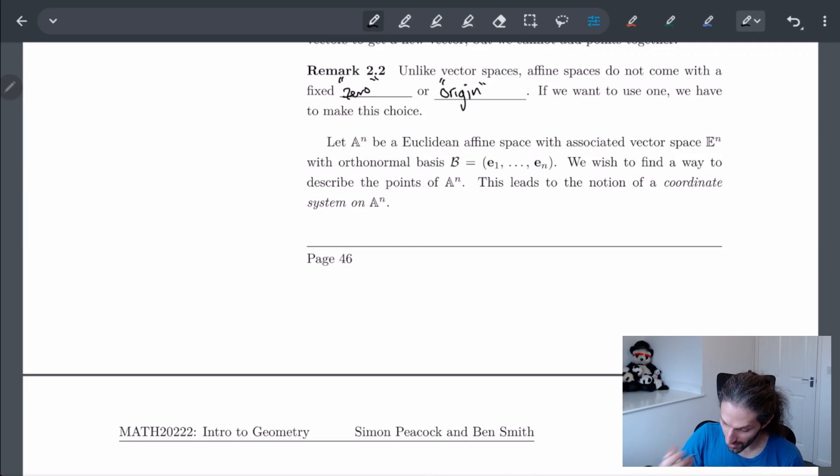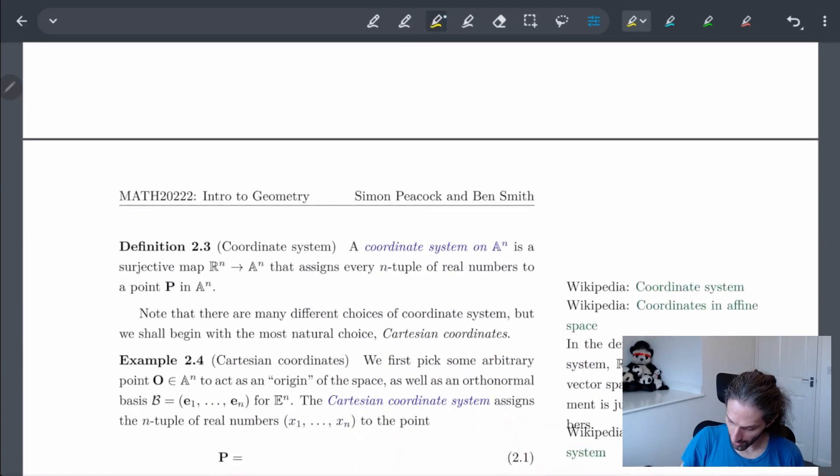We want to replicate this R^n. So this kind of leads us into the idea of what's called a coordinate system. So here, we're trying to find a way to describe the points A^n. So far, we've had no way to describe them. And this is one of the reasons why we have difficulty saying what is a zero. So a coordinate system is basically a system on the points where there's some kind of map from R^n, the real numbers, to A^n that assigns every n-tuple of real numbers to a point in P.